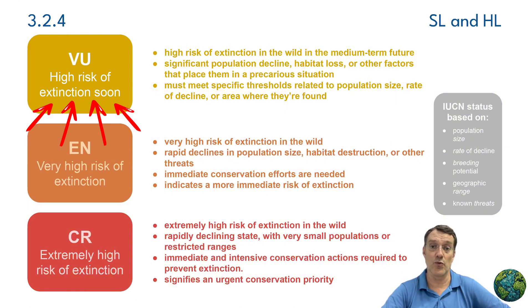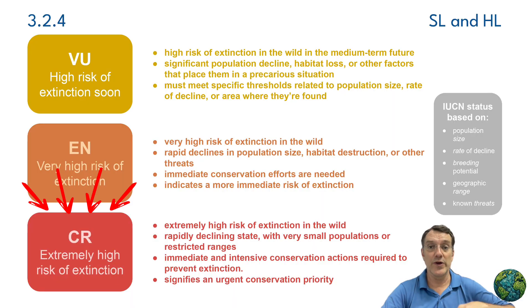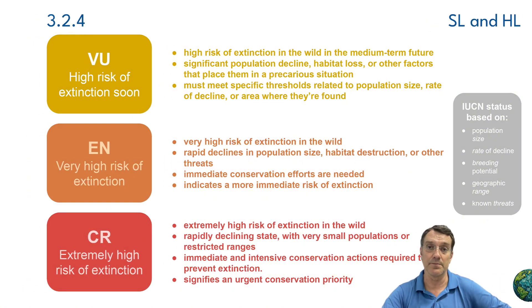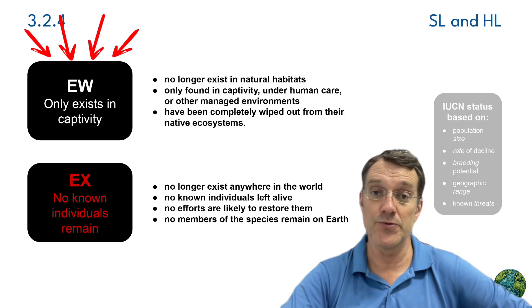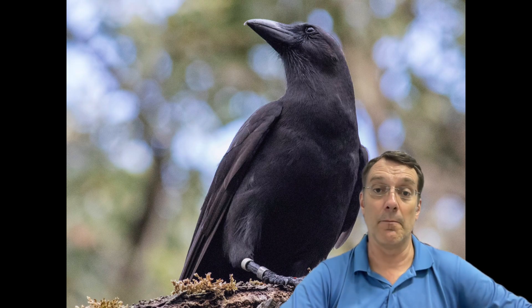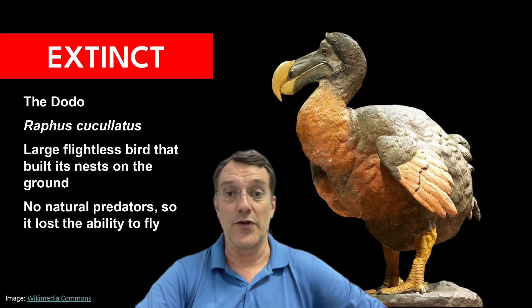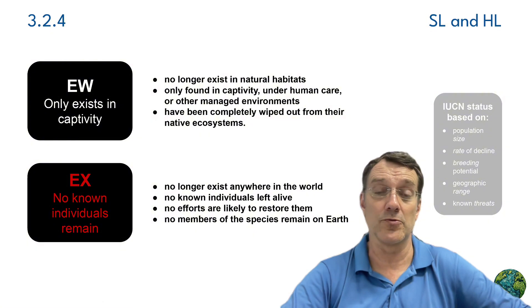Moving into the threatened categories, we see a progression of risk. Vulnerable species face a high risk of extinction in the wild if current conditions continue, having experienced significant population declines or habitat loss. Endangered species face an even higher risk with rapidly shrinking populations or very limited ranges — the African elephant is endangered because poaching continues to reduce its numbers drastically. Critically endangered represents the highest risk category before extinction; these species are in immediate danger and often have tiny populations facing multiple serious threats. Extinct in the wild means a species survives only in captivity — in zoos, aquariums, or botanical gardens — as happened with the Hawaiian crow. Extinct is the final irreversible category, where no individuals remain anywhere on Earth. The dodo bird and the passenger pigeon are classic examples; once a species reaches this point, its unique genetic information and ecological role are lost forever.